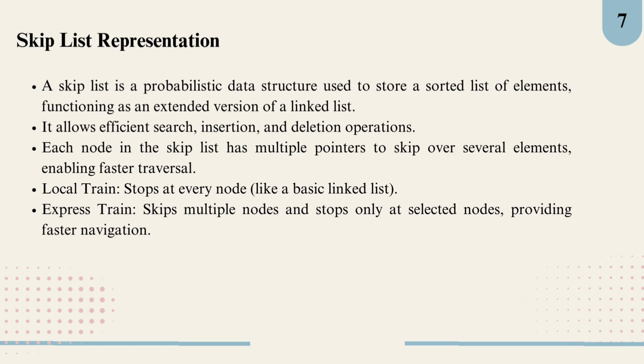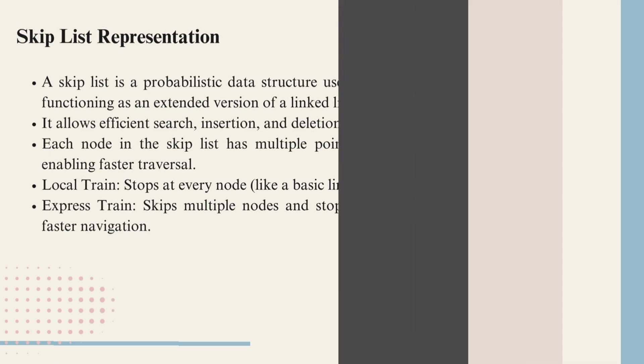To understand this better, let's compare with a train system. Imagine a local train that stops at every node - this is similar to a basic linked list where you have to go through each element one by one. But a skip list also has an express train option. This express train skips multiple nodes, stopping only at certain ones, enabling faster navigation across the list. By using these express lanes, skip list makes it much quicker to reach a target node, keeping the time complexity low even for larger data sets.